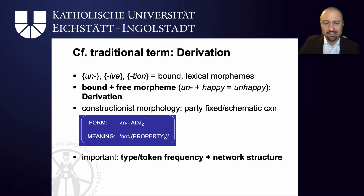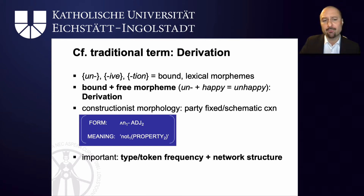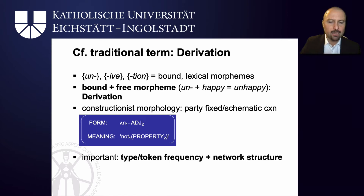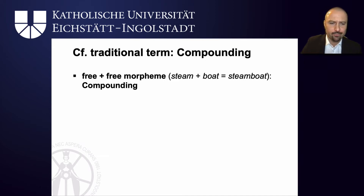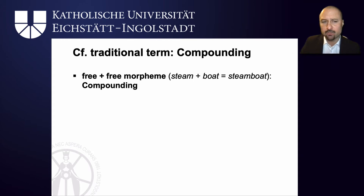Important for constructionist morphology is therefore type-token frequency — the specific exemplars that instantiate a specific schema, or help us arrive at a schema via type frequency — and the network structure of how, for example, an un-adjective construction is linked to the adjective construction. Let's look at two more productive word formation processes of English and see how we can capture them with a constructionist approach. The second one is compounding: steamboat consists of steam and boat, both of which are existing words — free morphemes. When two free morphemes are combined, this is known as compounding in traditional morphology.